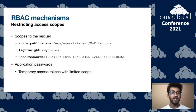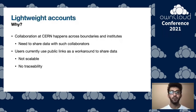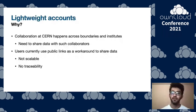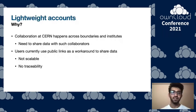We've also introduced lightweight accounts — these are for users who don't own a storage space but can access shares created with them. You might ask whether public links would suffice, but the problem is they don't scale. Collaboration at CERN happens across boundaries and institutes; we have researchers from other institutes and a lot of remote work. The LHC produces data at terabytes per second, so the need to share data with collaborators is constant. Public links were used as a workaround, but as the number of collaborators and files grows, managing those links becomes unscalable.